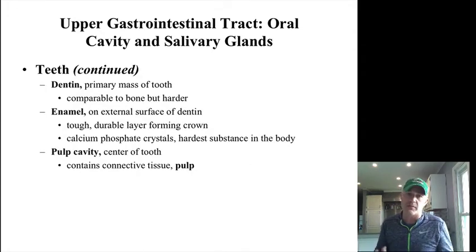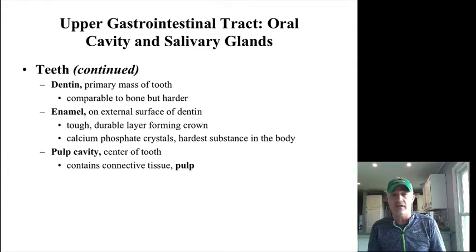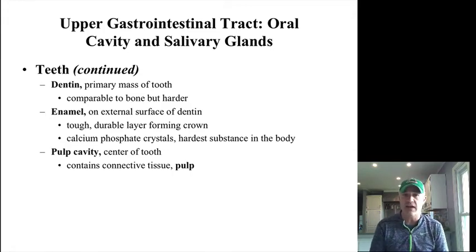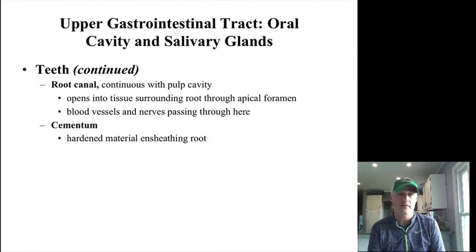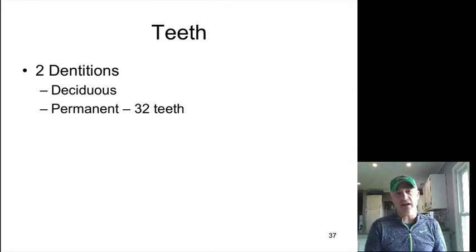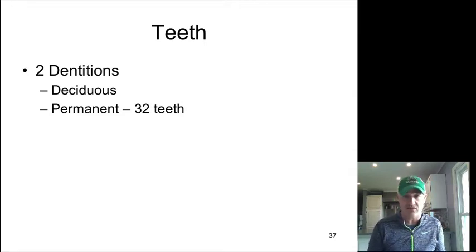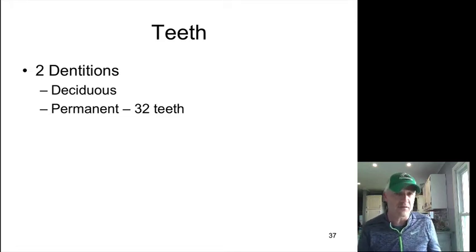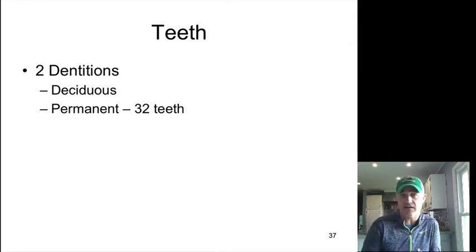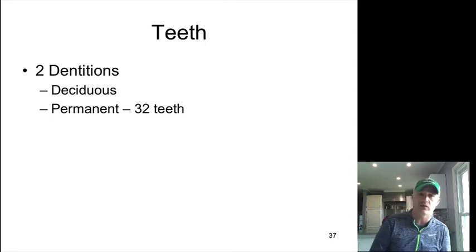Enamel is a calcium phosphate crystal and is the hardest structure in the body — actually harder than bone. The inner part of the tooth is living, containing connective tissue pulp along with a nerve, which is why cavities and other issues can cause really bad toothaches. We have deciduous (baby) teeth — like deciduous trees that lose their leaves, we lose our deciduous teeth — and then permanent teeth. On most people that will be 32 teeth of slightly different types. We are omnivores, so we have canines and incisors along with molars.